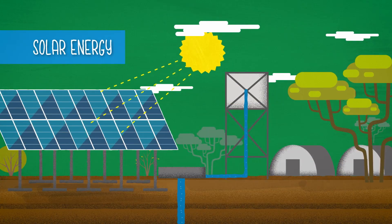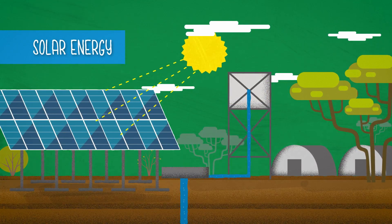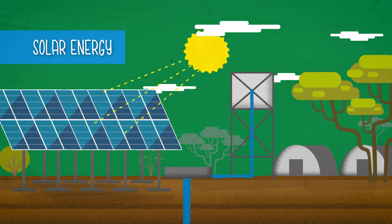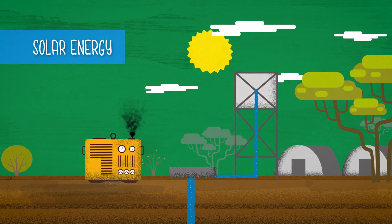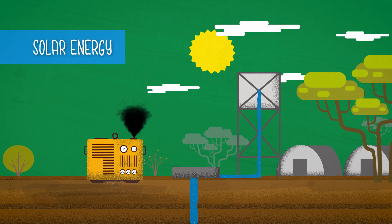Research has shown that for off-grid areas, solar energy is the cheapest and most reliable solution for pumping and supplying water. However, it is still not being widely adopted for humanitarian responses.